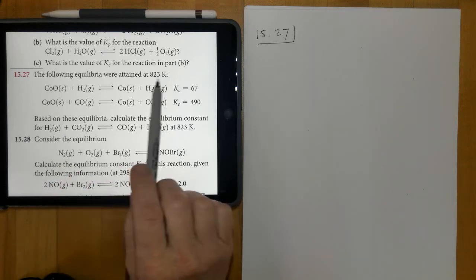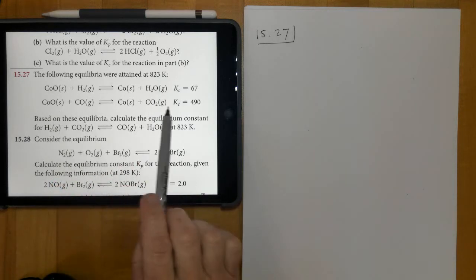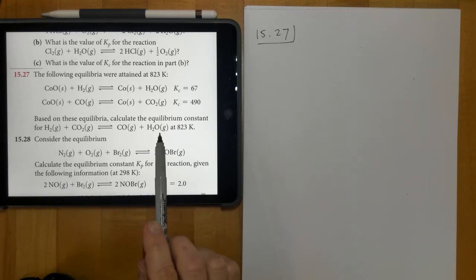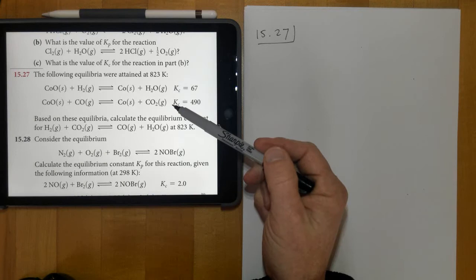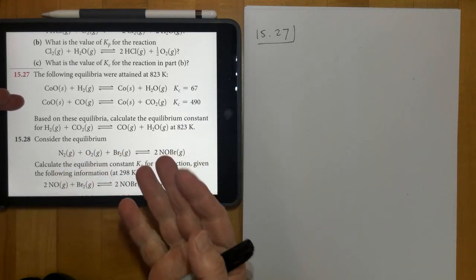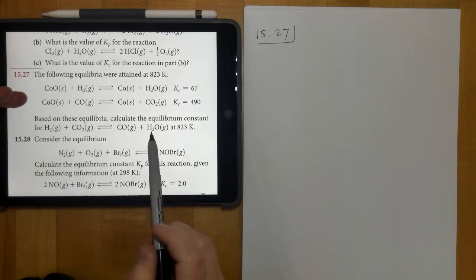15.27 says the following equilibria were obtained, and then we have two given equations. And then we have a third equation right here that's based on these two. And you can see that if you take these two equations and you manipulate them, then you could end up with this equation.